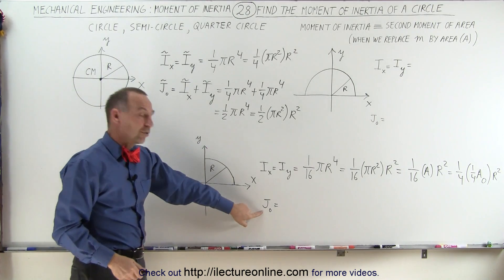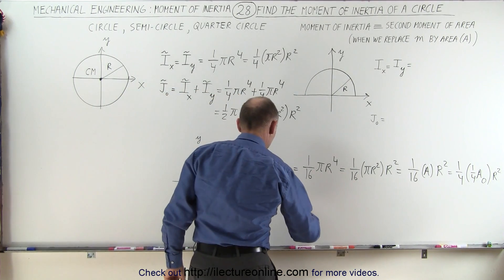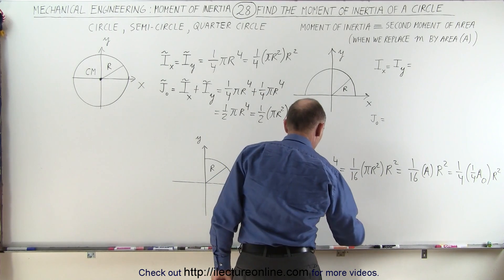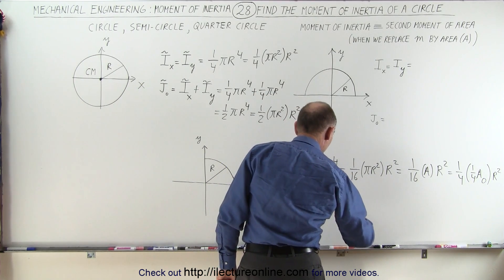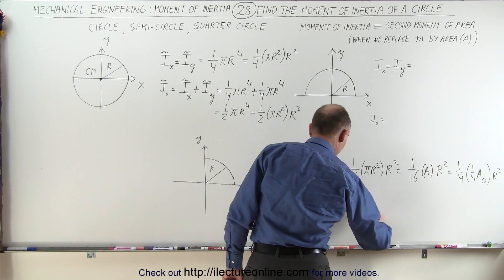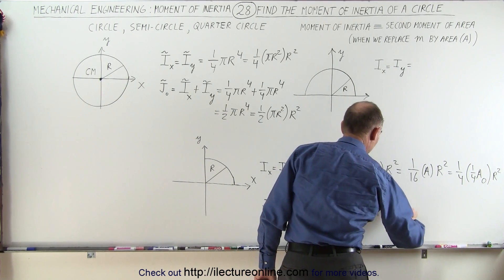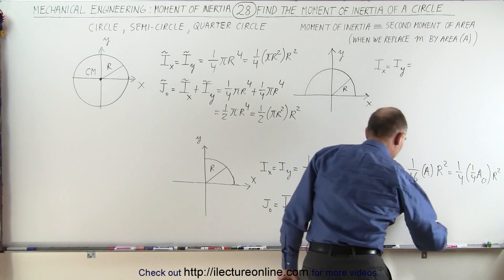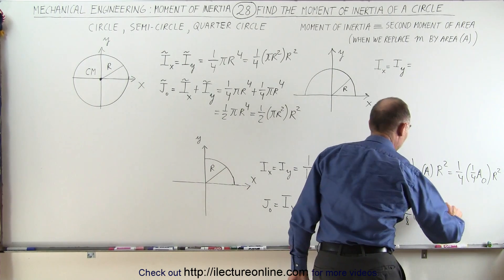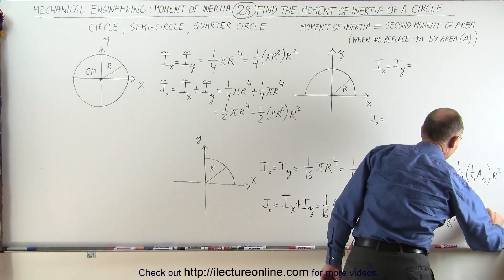To find the moment of inertia of the quarter circle relative to the origin, we simply add these two together: Ix plus Iy, which equals one-sixteenth the area of a full circle times r squared plus one-sixteenth the area of a full circle times r squared, giving us one-eighth the area of a full circle times r squared, or one-eighth times pi r squared times r squared.